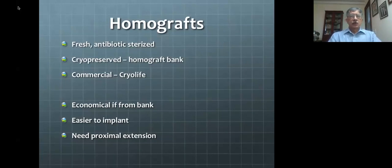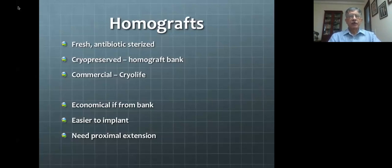Many institutions have developed homograft banks, as long as they have availability of cadaveric hearts to harvest from. They can then have various sizes of homografts available and are not dependent upon scheduling surgery around homograft availability. In the United States and some European countries, homografts are available commercially — a company called CryoLife supplies them commercially, obtaining hearts from transplants or other sources. Unfortunately, this commercial CryoLife product is not available in our country.